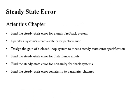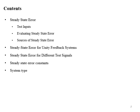After this chapter you will be able to find steady-state error for a unit feedback system, specify steady-state error performance, and design the gain of a closed-loop system that meets the given requirement of steady-state error specification. You will also be able to find steady-state error when disturbance is present, for non-unit feedback systems, and steady-state error sensitivity to parameter changes. Contents of this lecture include steady-state error, test inputs, how to evaluate steady-state error, and sources of steady-state error.